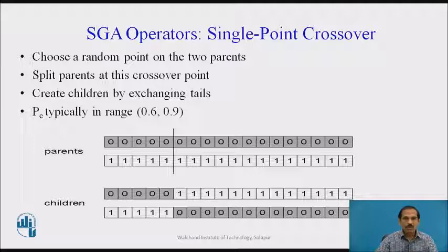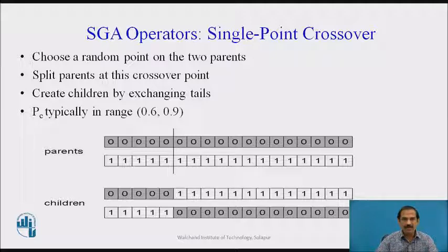Single-point crossover is demonstrated by choosing a random point on the two parents. We split the parents at the crossover point, indicated by the vertical line, and create children by exchanging the tails. The probability of crossover is ideally taken in the range of 0.6 to 0.9.